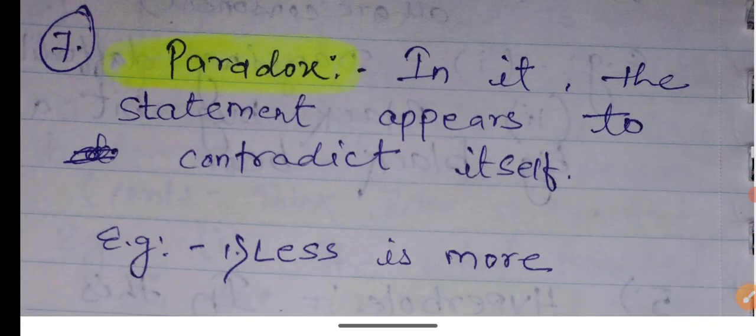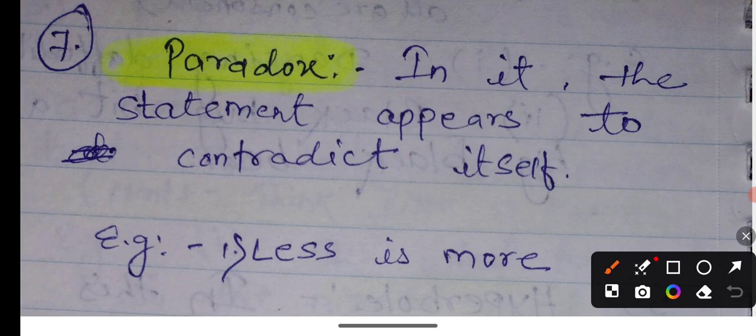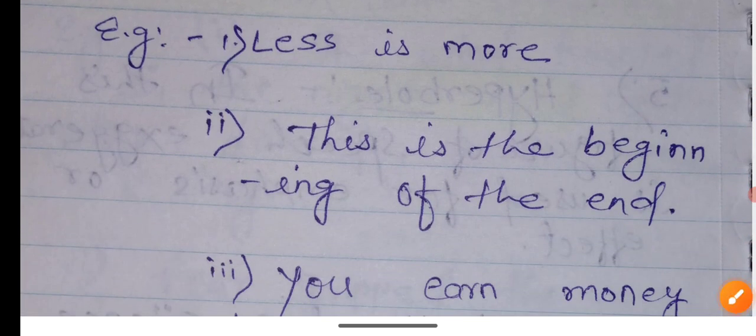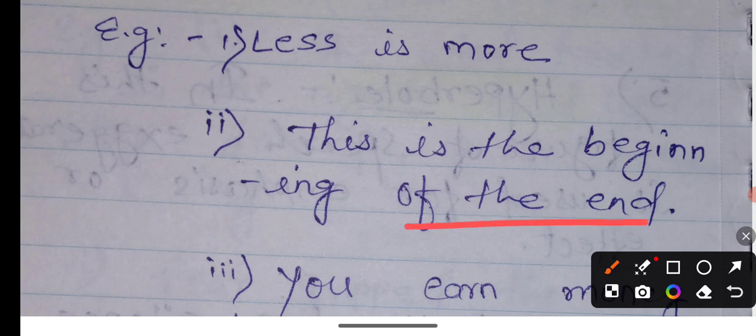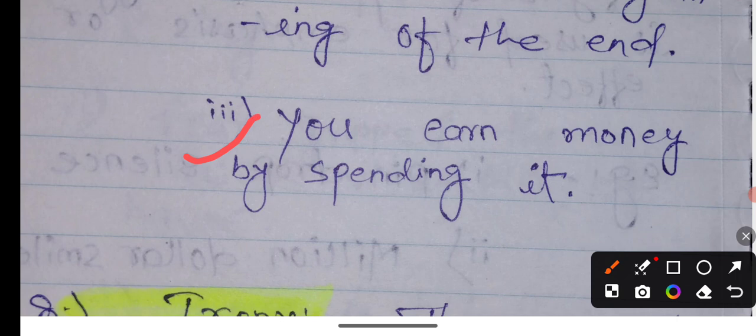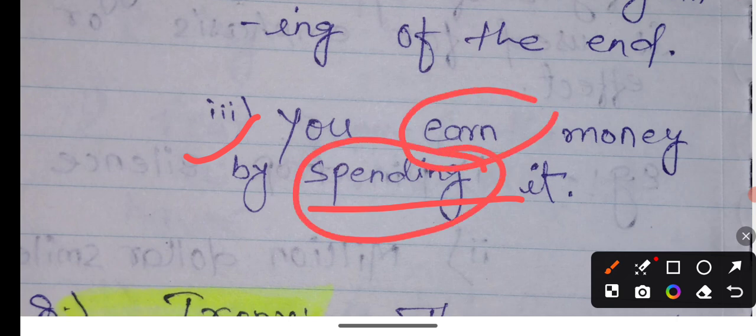Figure of speech number seven: Paradox. What is it? The statement appears to contradict itself. This is the beginning of the end. You earn money by spending it.